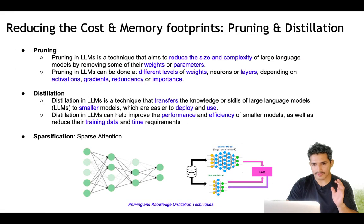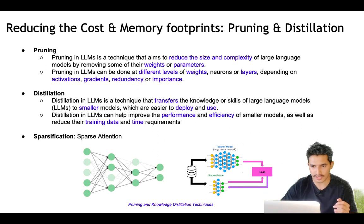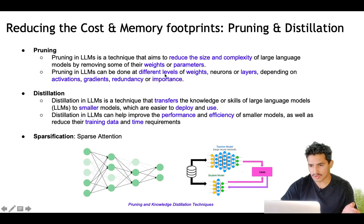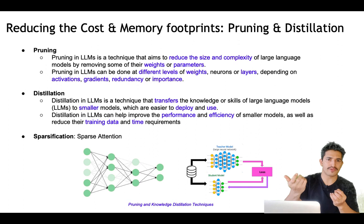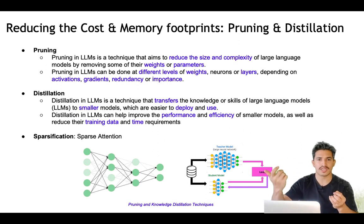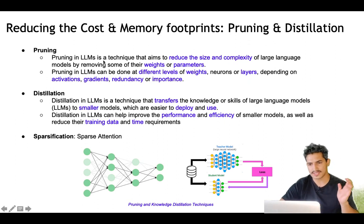Pruning in LLMs is a technique that reduces the size and complexity of LLMs by removing some weights or parameters that might not be very important. Pruning can happen at different levels — weights, neurons, or layers — depending on what activations, gradients, and redundancy tell us. If a layer produces high activations it's important and should be kept; if activations are low, the layer can be removed. Because of pruning, the model becomes smaller and training and inference run faster.